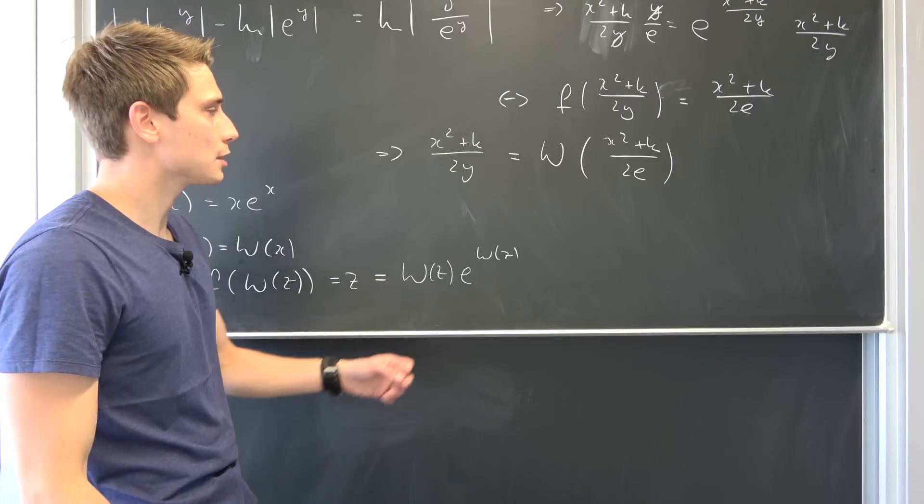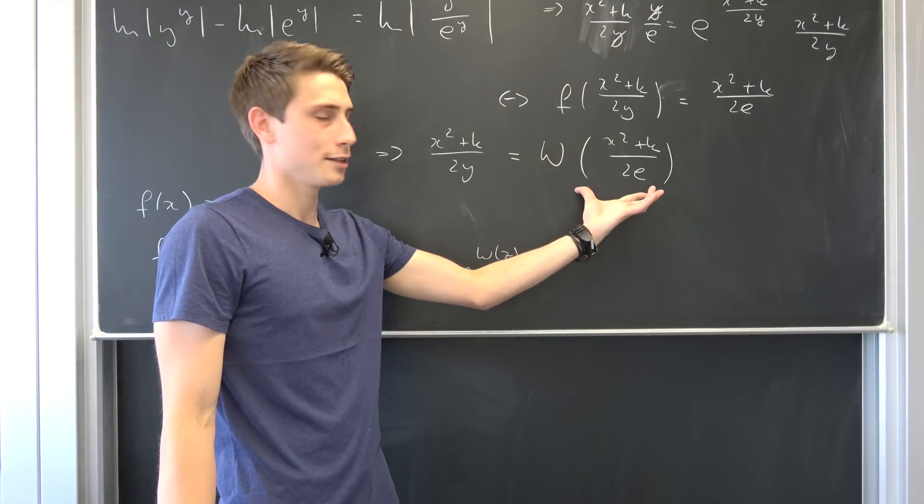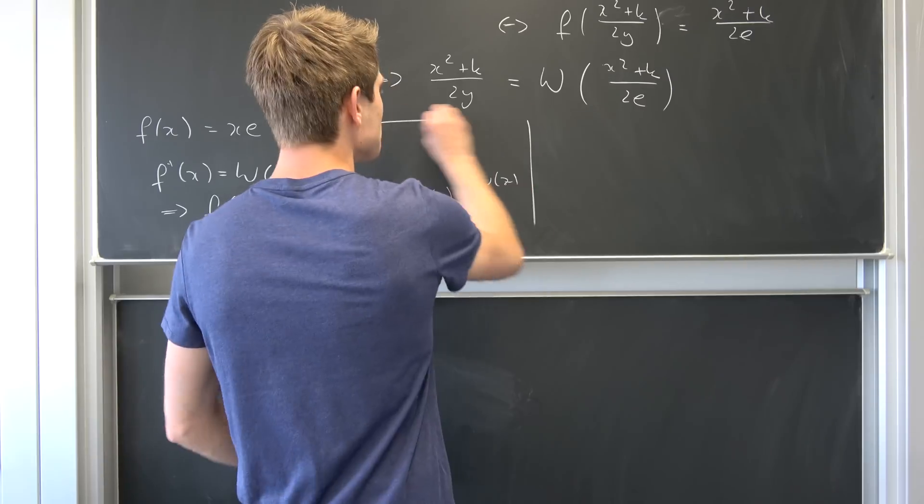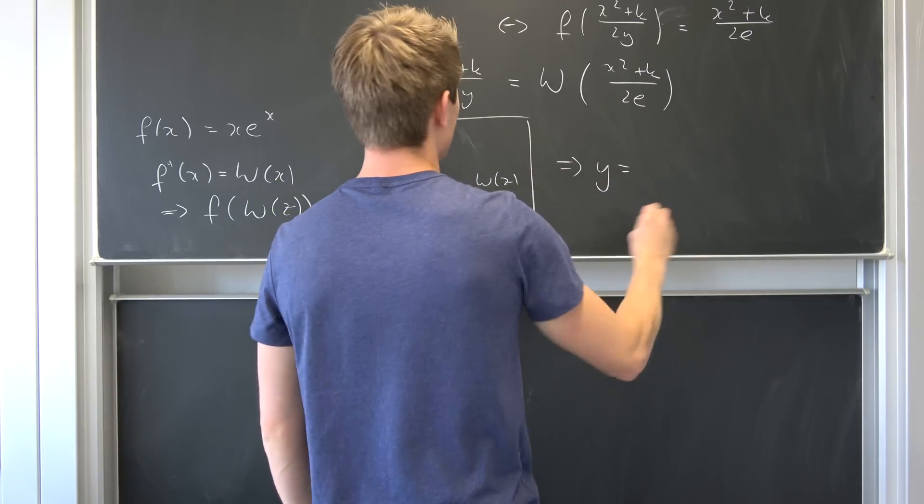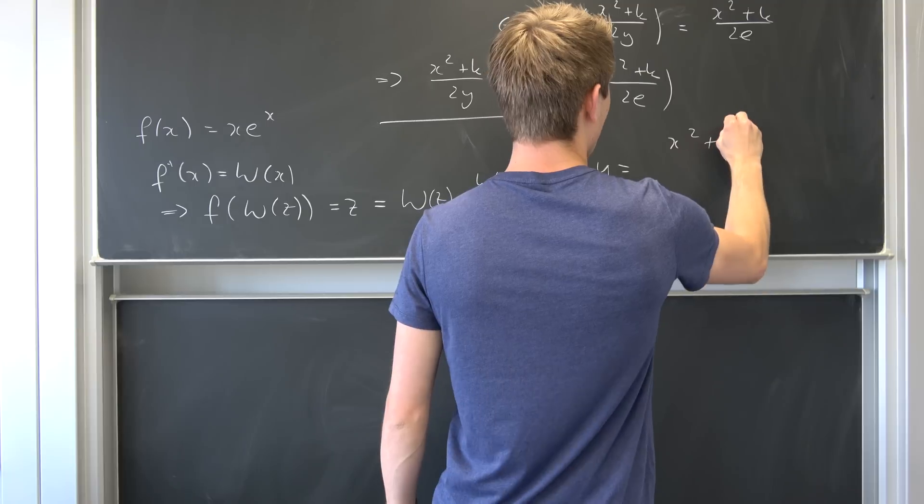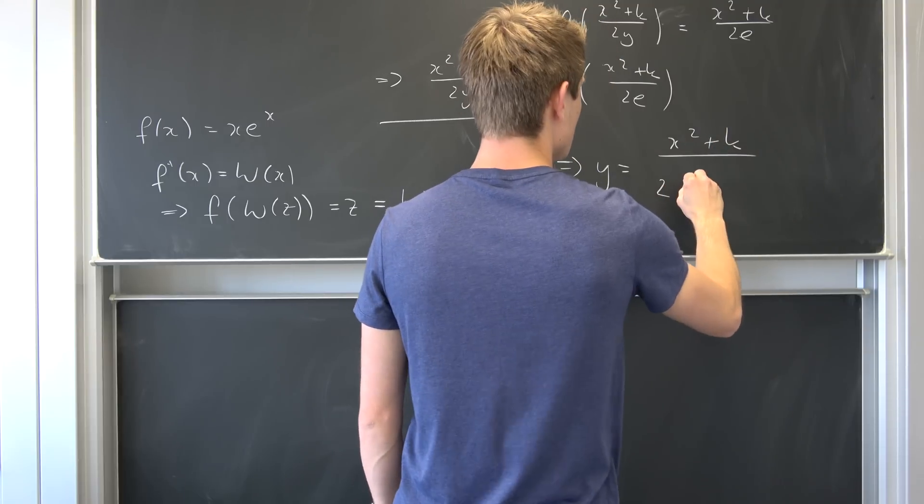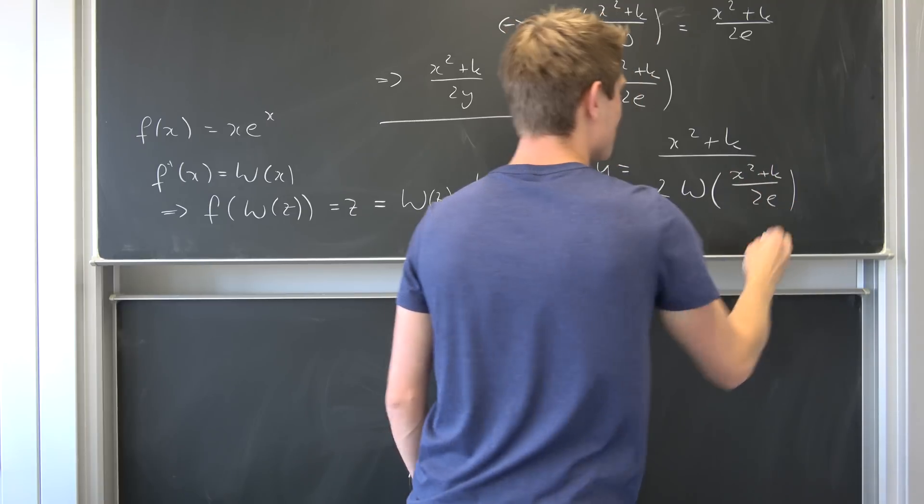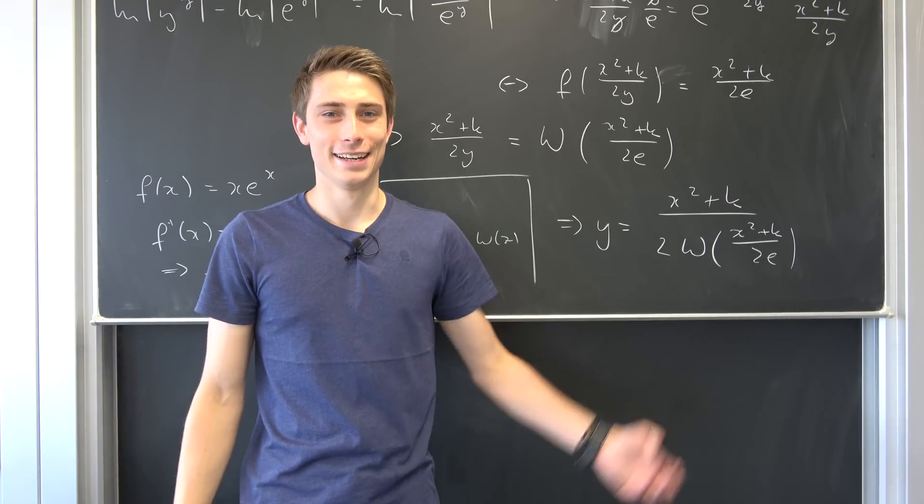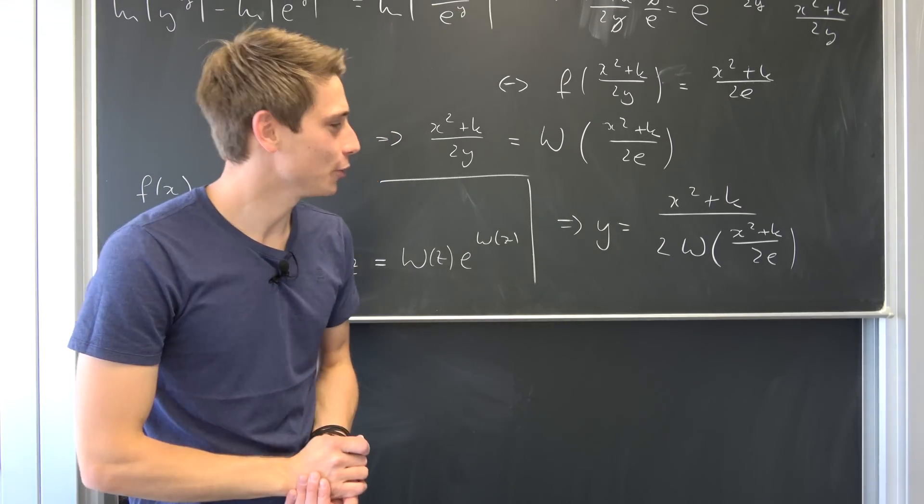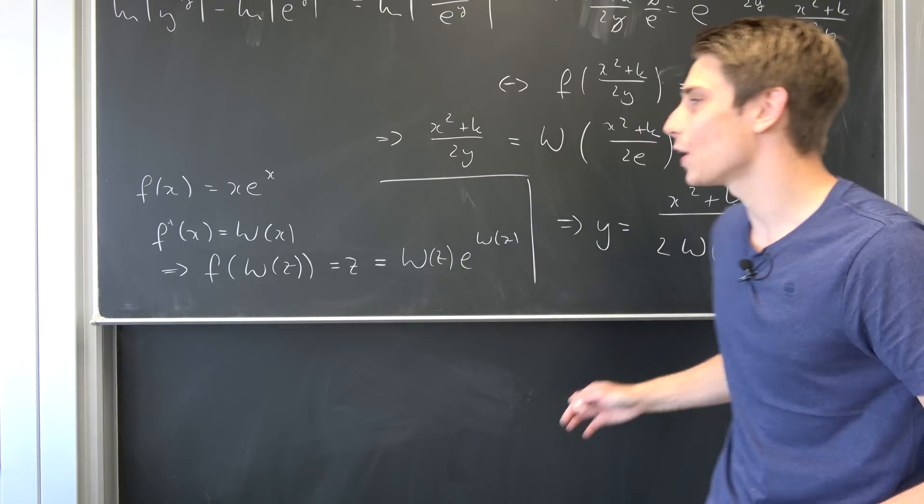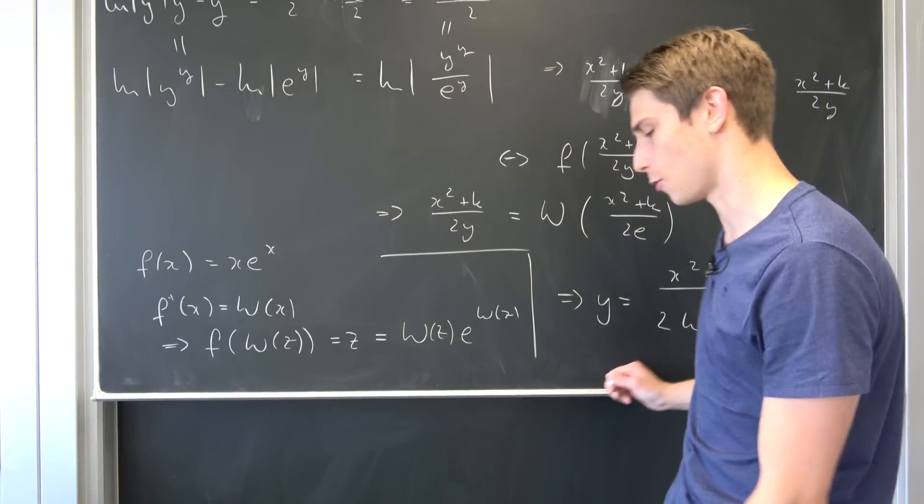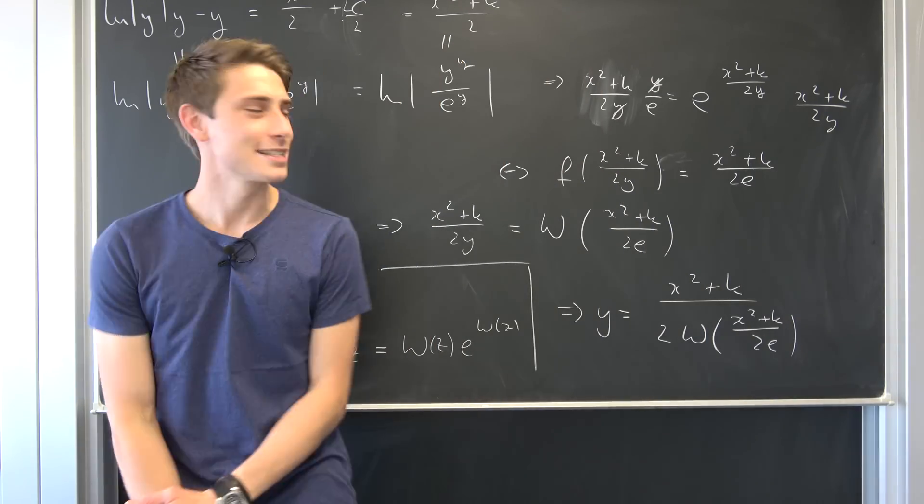And now all that's left to do is to multiply both sides by y and divide both sides by this weird boy right here. So finally our expression for y is now nothing but x squared plus k over 2 times Lambert w of x squared plus k over 2 times e. And that's quite cool if you ask me. So this is quite a cool result for something easy like this y prime being equal to x over natural log of y. Yeah. So this is really cool.